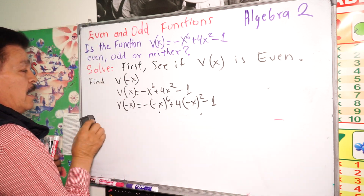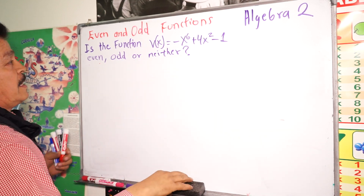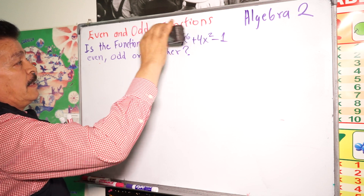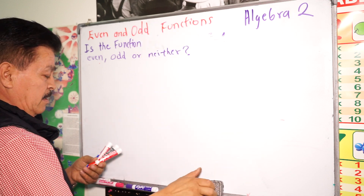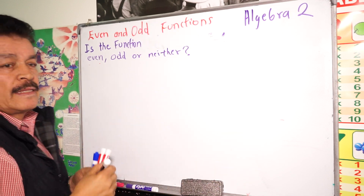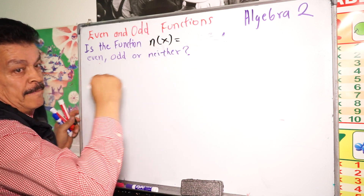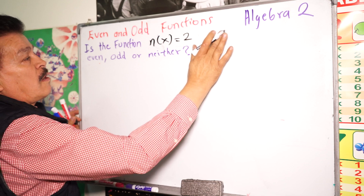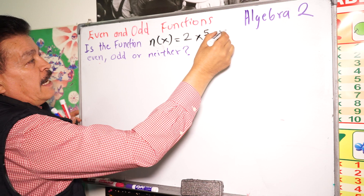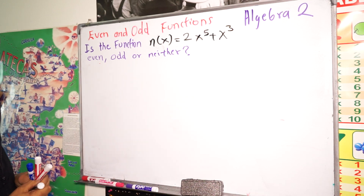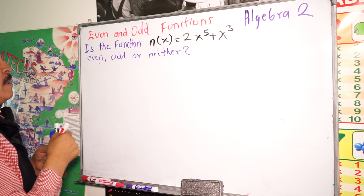Let's solve another problem. Is the function n(x) equals 2x to the fifth power plus x to the third power — even, odd, or neither?